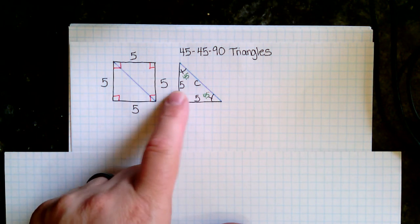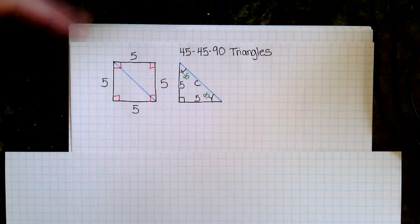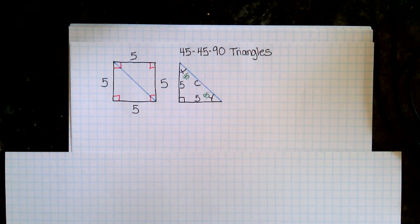So the side lengths are the same. The diagonal cuts the 90 degree angle into two equal parts. That's where the 45-45-90 comes from.